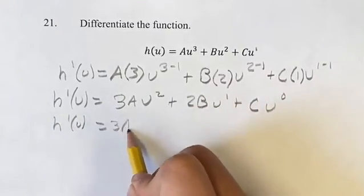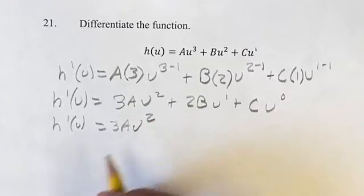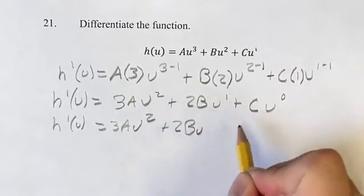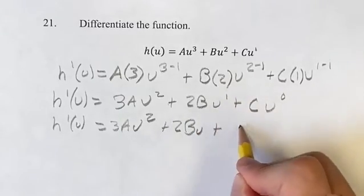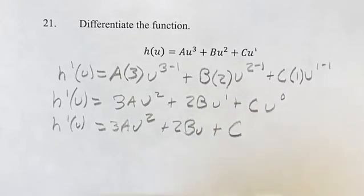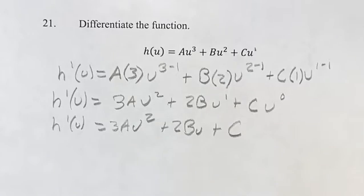So, one more time, 3a times u squared, plus 2bu, u to the 1 is just u, plus c, u to the 0. Anything to the 0 is just 1, so it's c times 1, which is just c.